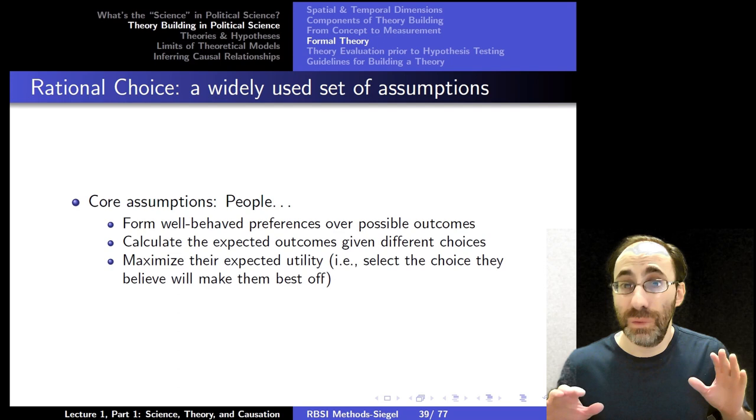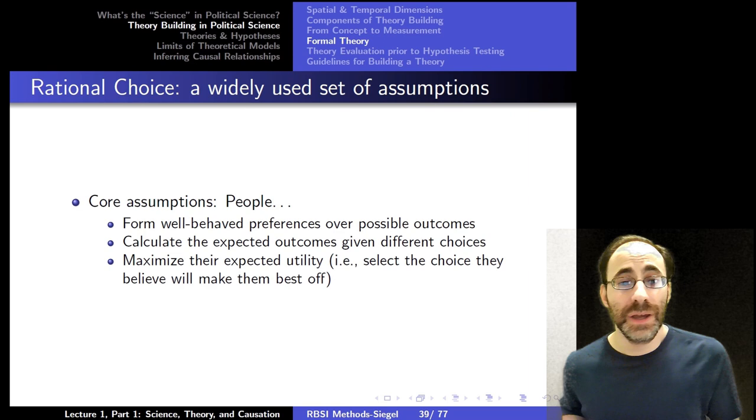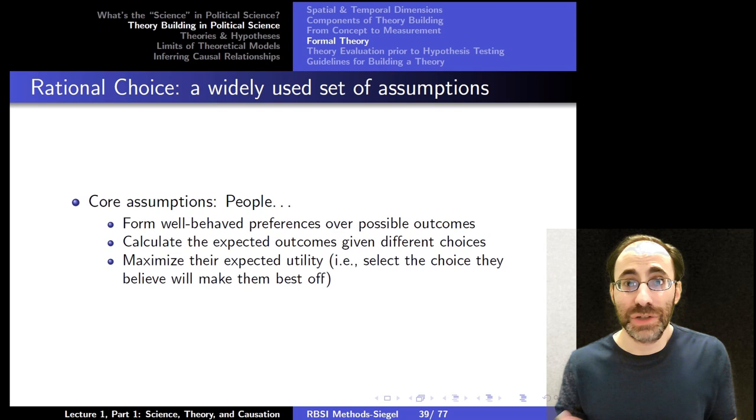Rather, rational choice has a set of core assumptions. First, people form well-behaved preferences over possible outcomes. So if I'm given a list of things I might care about, I have well-behaved preferences over that list. I know what my favorite thing in the list is. I can compare any one of those list elements to each other.